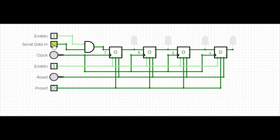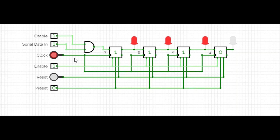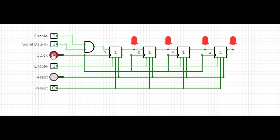Now the circuit is enabled. Let's make the input one — that's our data in. This is your data out for the serial in, serial out register. Let's apply the clock. At the first clock, the first LED is glowing. At the second clock, the second LED is glowing. At the third clock, the third LED is glowing. At the fourth clock, the fourth LED is glowing and the output is also displayed. You can also reset — I press the reset button and all the LEDs turn off.